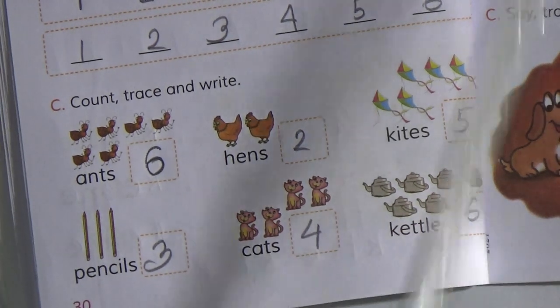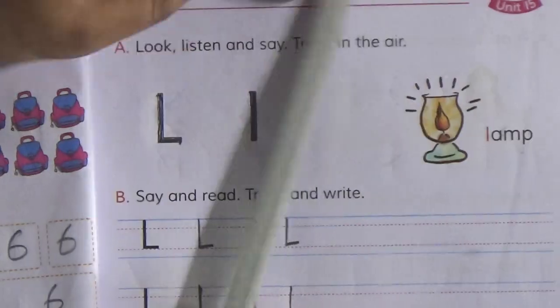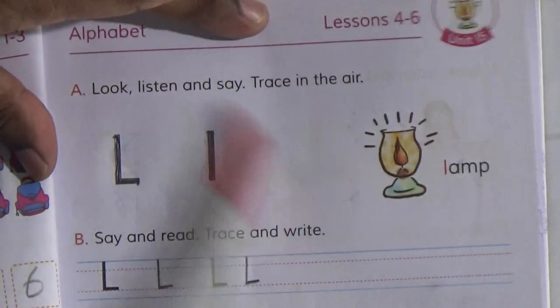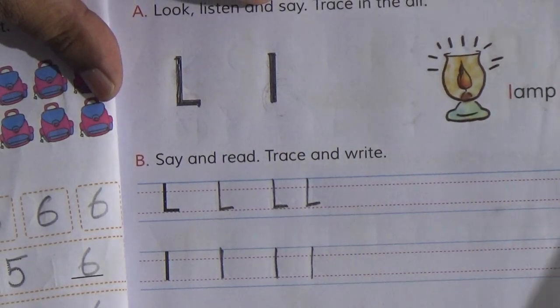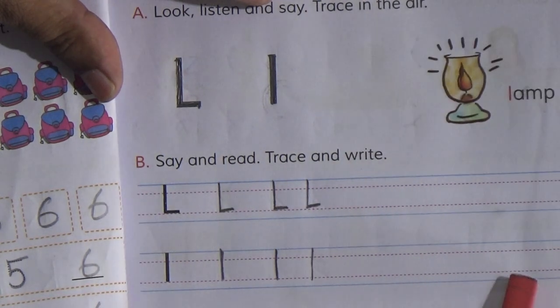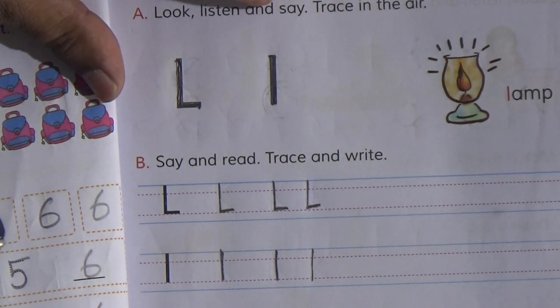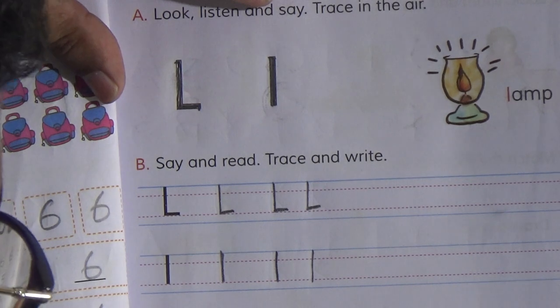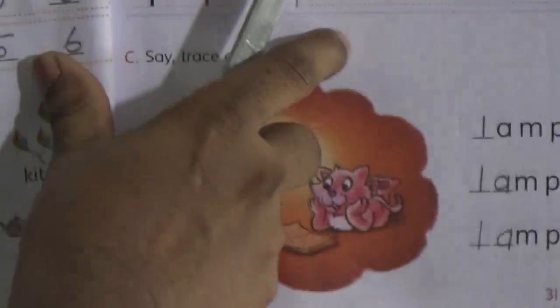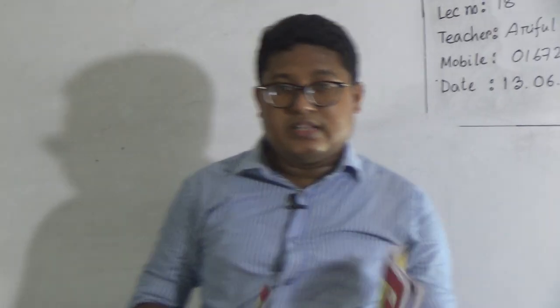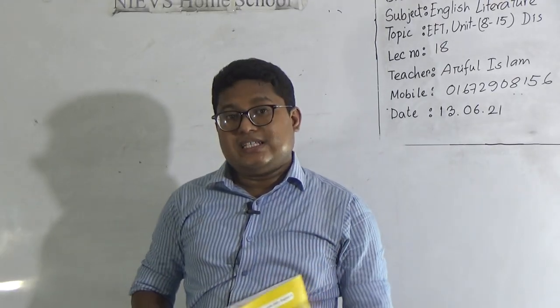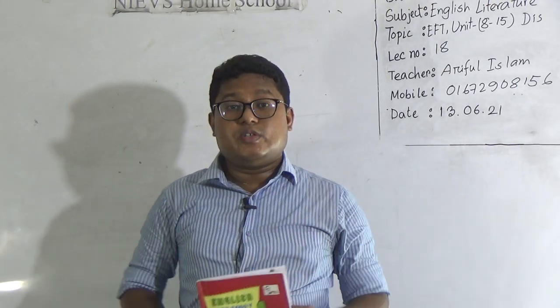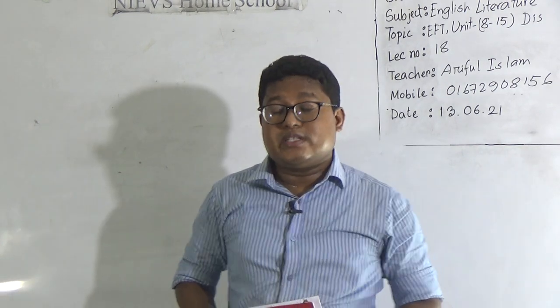Page 31 — trace the letter L, and fill in the capital and small letters: L-A-M-P, 'lamp.' L-M, L-M, L-M-P. So my students, we have finished from lesson 8 to 15. Don't worry — this will not come in your exam, just for practice. Keep practicing at home. See you again! Assalamualaikum.